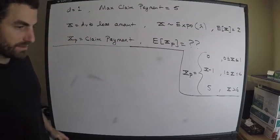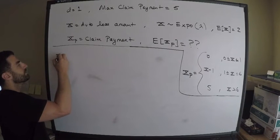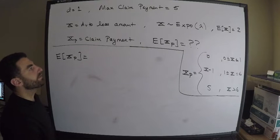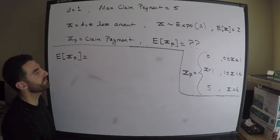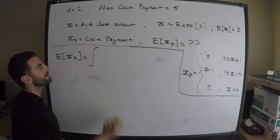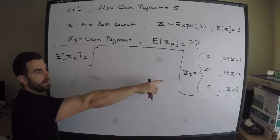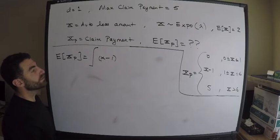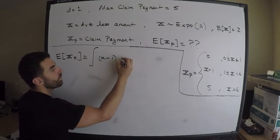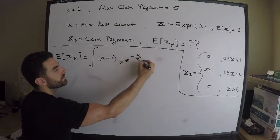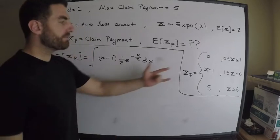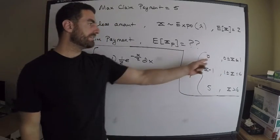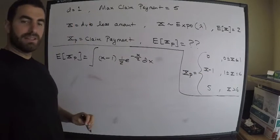Now let's write down the expression we're after: the expected value of the claim payment, using the definition of expected value. Since we have a continuous random variable, we integrate. The first integral has integrand X minus one times the probability density function. The PDF of the exponential distribution with mean two is one-half times e to the negative x over two. The bounds run from one to six.